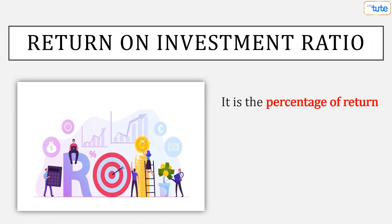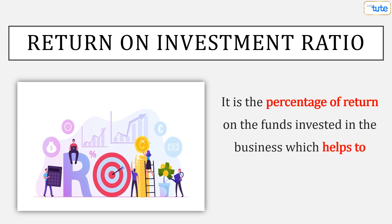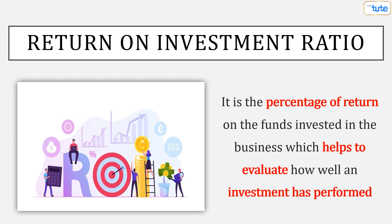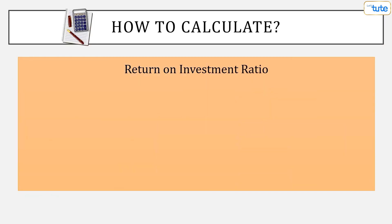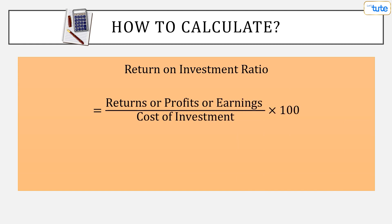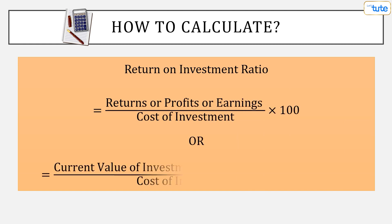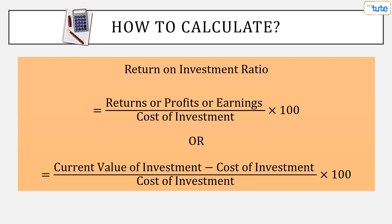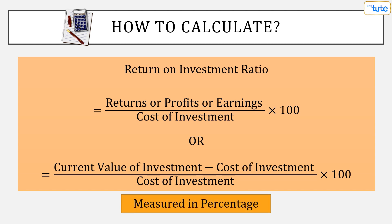Return on investment is the percentage of return on the funds invested in the business. This helps to evaluate how well an investment has performed. The formula to calculate return on investment is: returns or profits or earnings divided by cost of investment, or the current value of investment less cost of investment divided by the cost of investment, multiplied by 100, measured as a percentage.